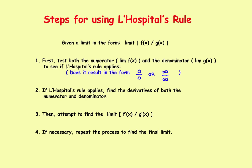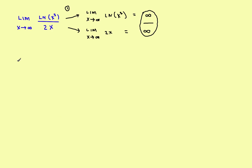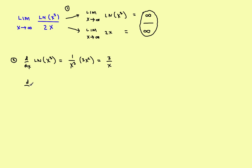Now we go to step two: find the derivatives of both the numerator and the denominator. The derivative of ln(x³): using the chain rule, it's one over the argument times the derivative of the argument, which gives one over x³ times 3x², and the x's cancel, leaving 3 over x. The derivative of the denominator 2x is simply 2.